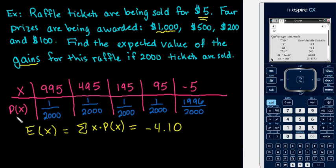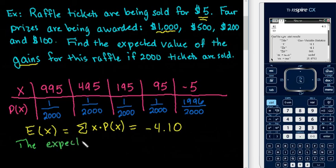If we wrote this as a sentence, we could say that the expected gains are negative 4.10. You can either call it an expected gain, or you could also say that we really have an expected loss. So on average, most people will lose $4.10. As always, thank you for watching.